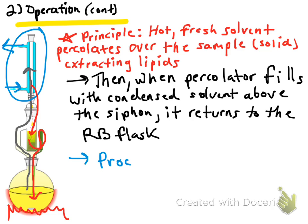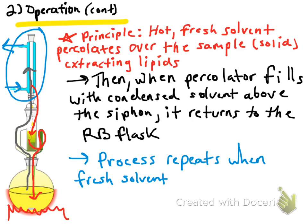This is the driving force behind the siphon: once the solvent refluxes into the boiling flask, it is evaporated again — but the evaporation only carries fresh solvent upward. All the extractables, the lipids, remain in the flask while fresh solvent travels up and down again, extracting more. This is what drives the extraction method.